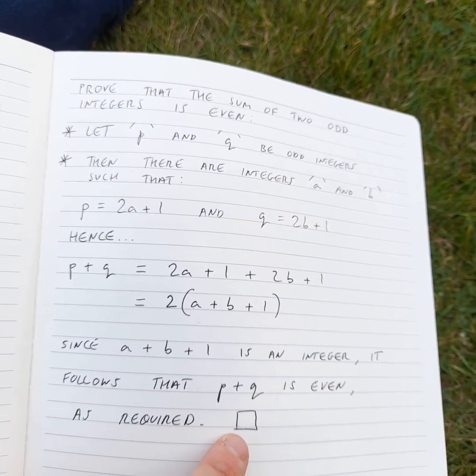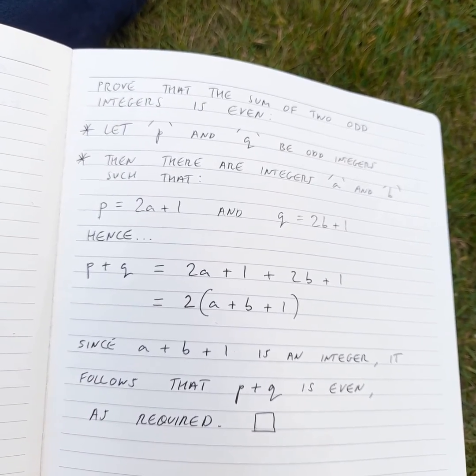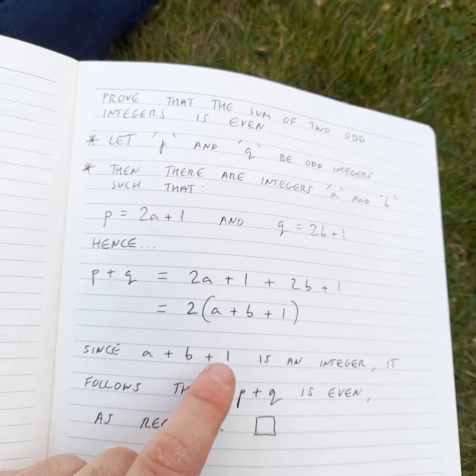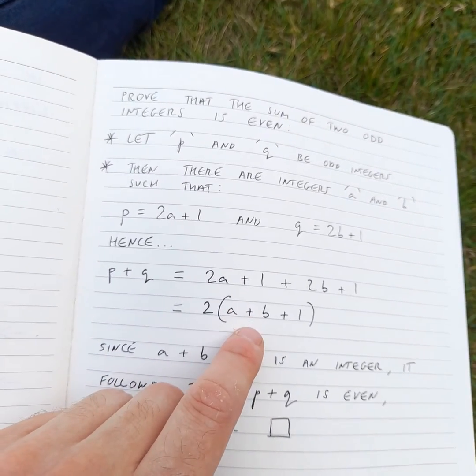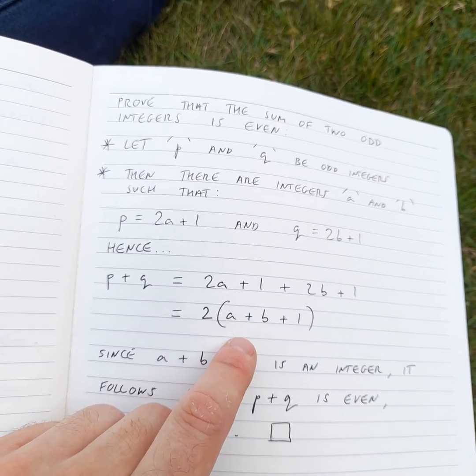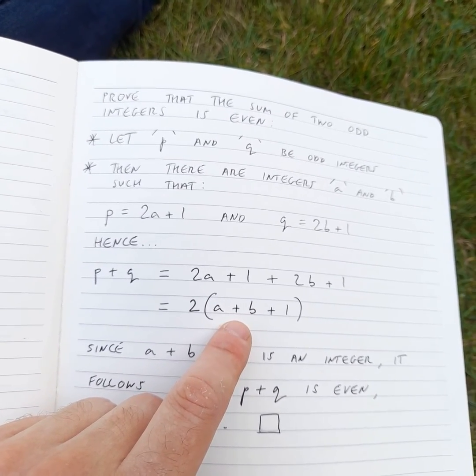And what we do is put the square over here to demonstrate that we've completed our proof. Now, the reason why this is true is because this expression here is the same as an expression for an even number.